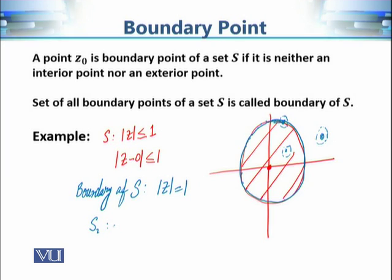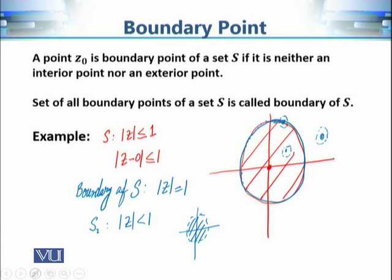Similarly, consider the open disk S₂ defined by |z| < 1 — the set of all points whose distance from the origin is strictly less than 1. In this case, the boundary is not included in the set. However, the boundary of S₂ is once again the circle of radius 1, because every neighborhood of a point on that circle contains points inside and outside S₂.